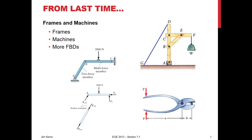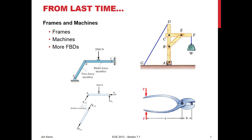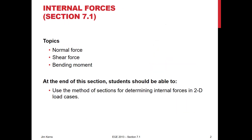So last time we talked about frames and machines, and we did more free-body diagrams. If you recall, if we have a frame like this, we can break it down into its different elements, draw free-body diagrams of those elements. Some of those may be two-force elements, some are going to be multi-force elements, and we can usually find loads and forces at the joints, reaction forces, things like that.